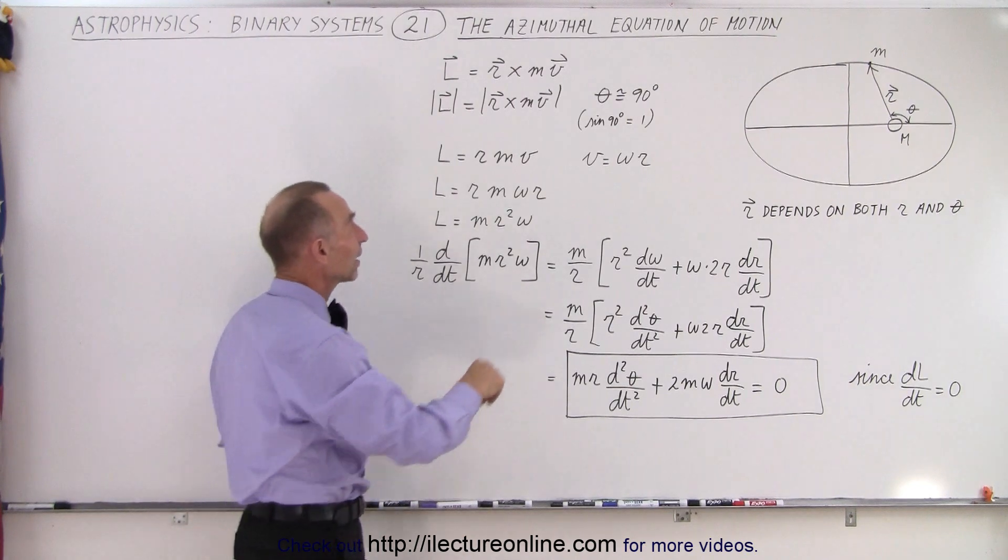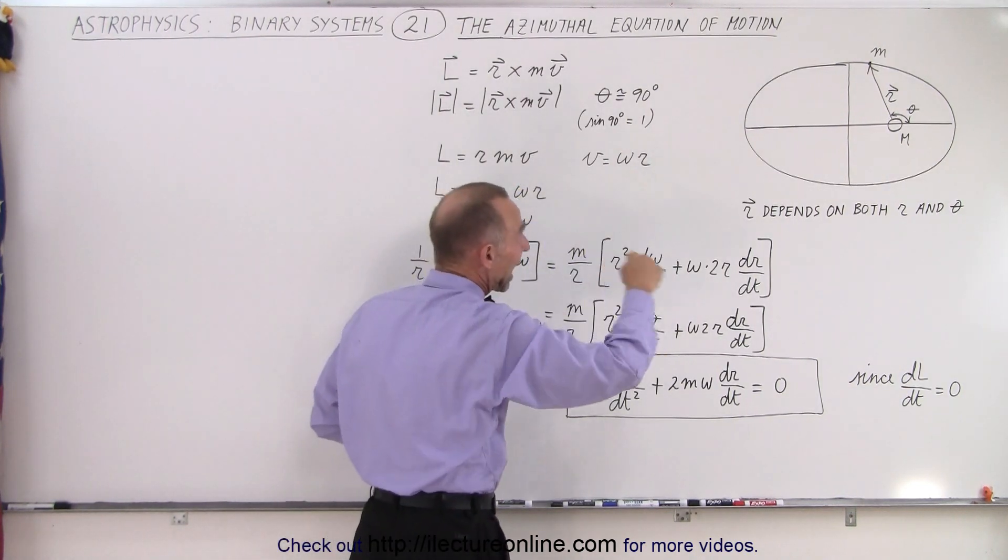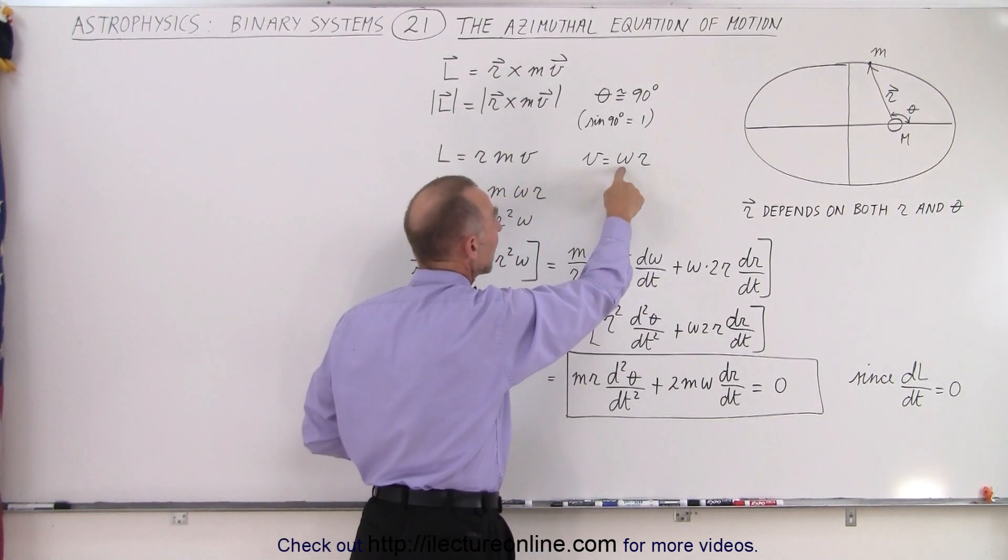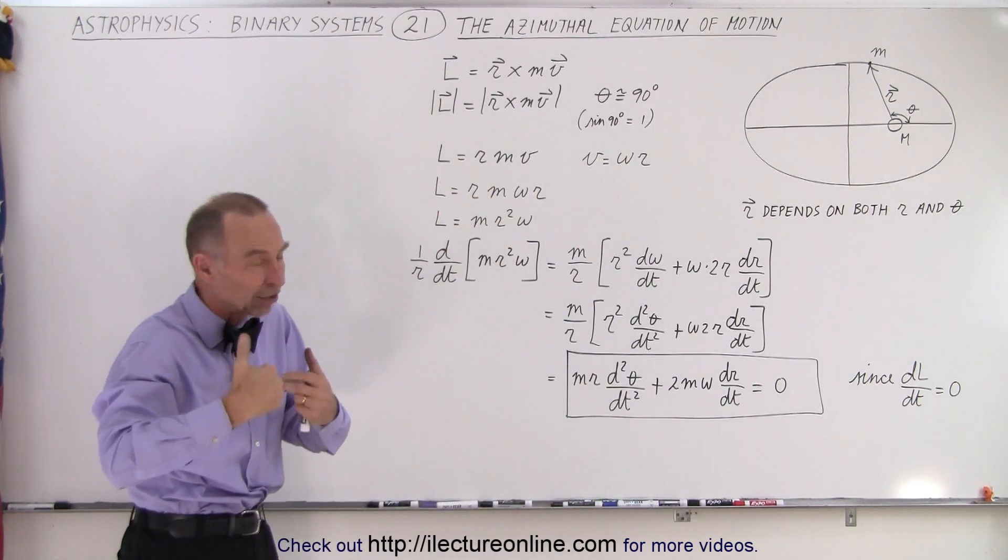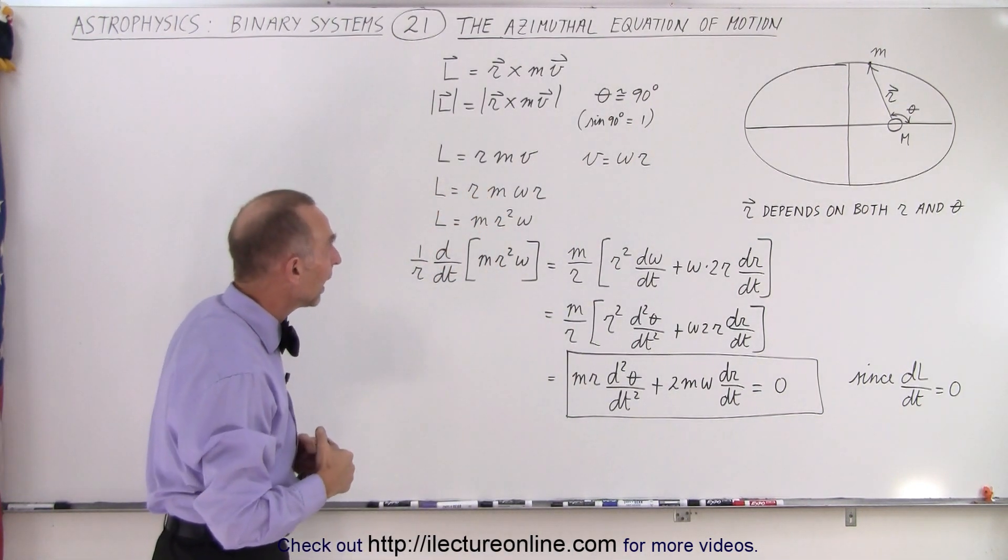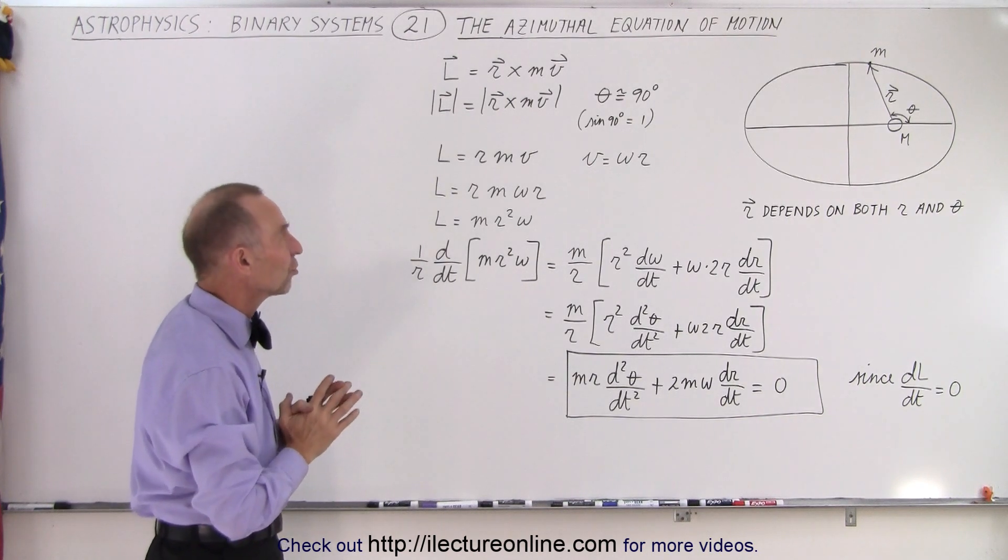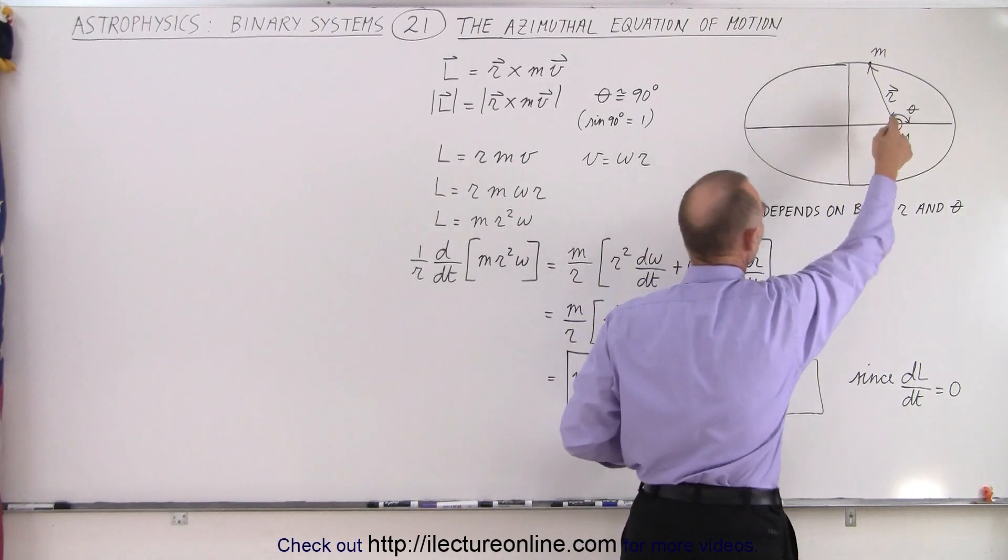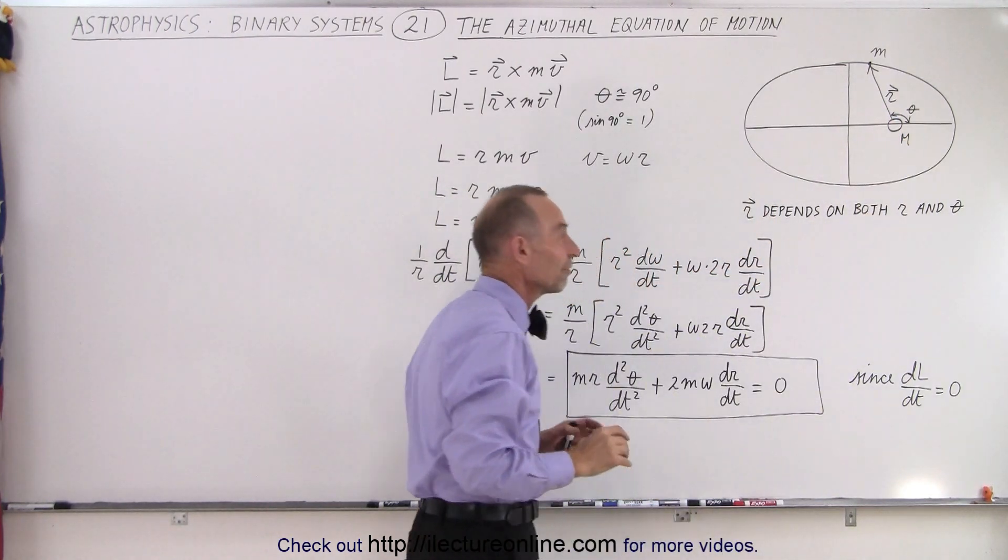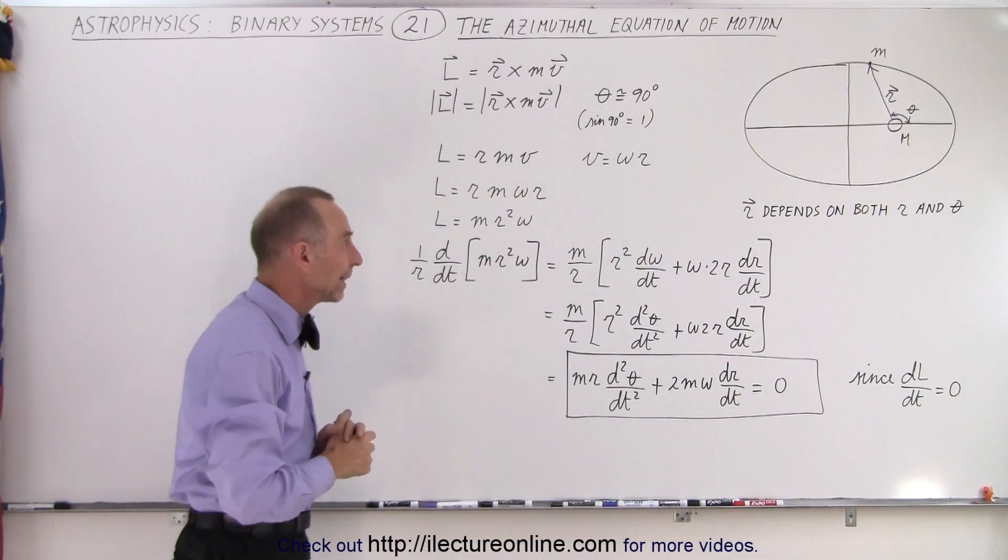Now we realize that the velocity along the path of the planet is equal to the angular velocity times the radius R. Of course the radius is always going to change and Omega is also going to change. Omega being d theta dt, theta being the angle here displayed, and remember that the position vector depends both on R and theta.